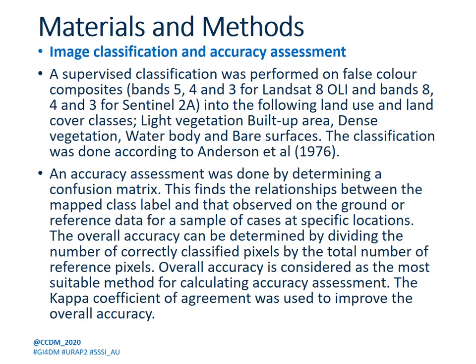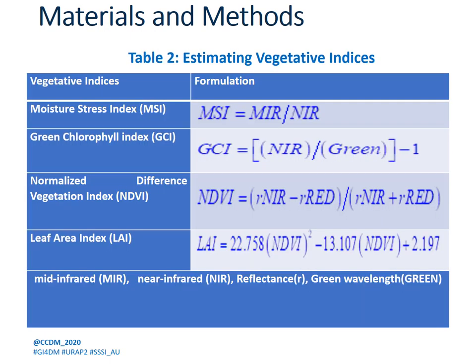The accuracy assessment was done by determining a confusion matrix, which finds the relationship between the mapped class and reference data for sample cases at specific locations. Overall accuracy is determined by dividing the number of correctly classified pixels by the total number of reference pixels, and is considered the most suitable method for calculating accuracy assessment. This table shows how the different vegetative indices were calculated.